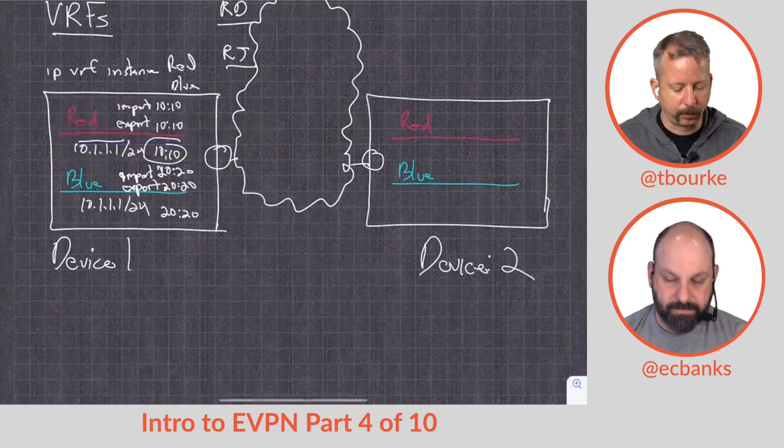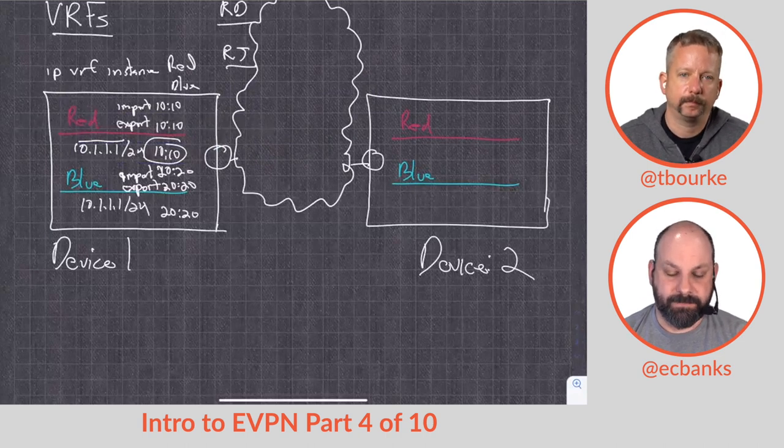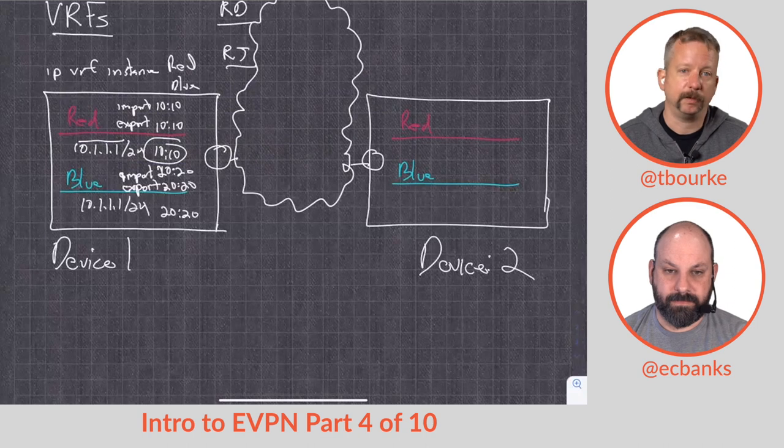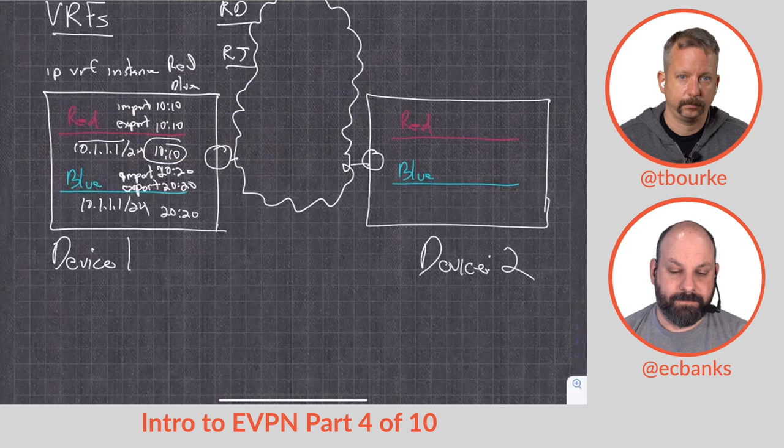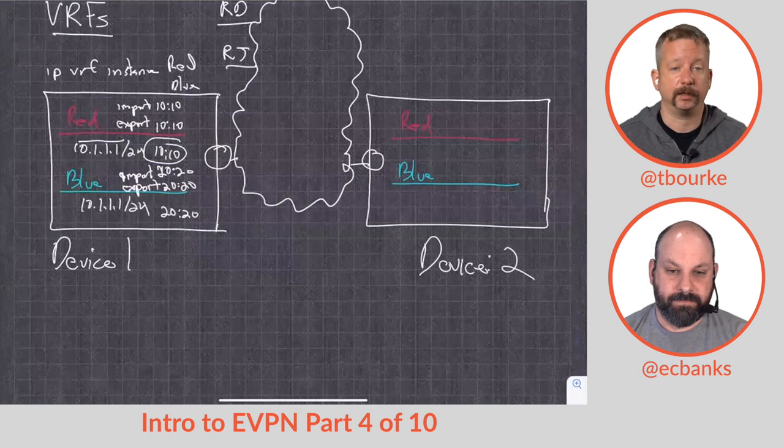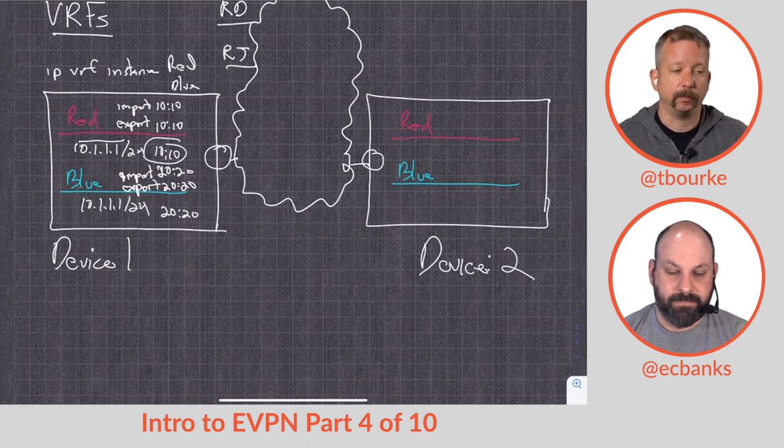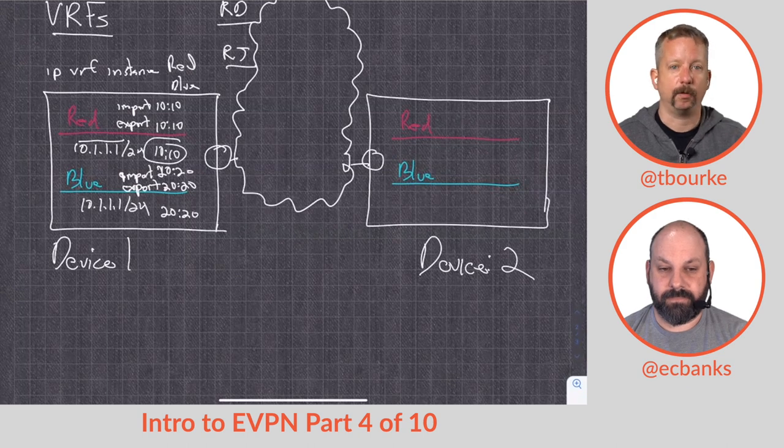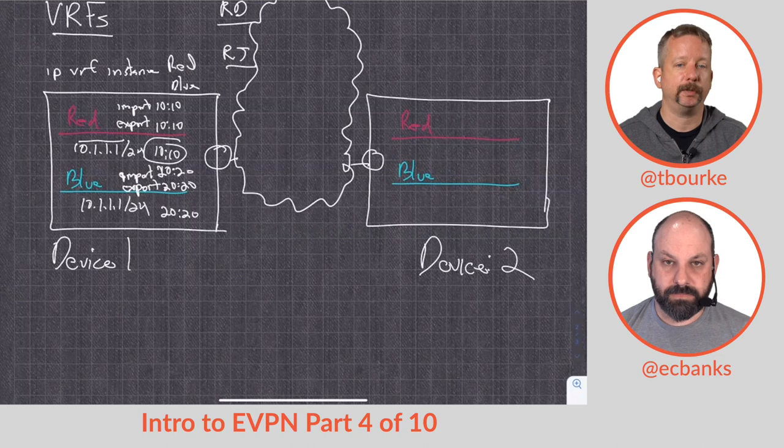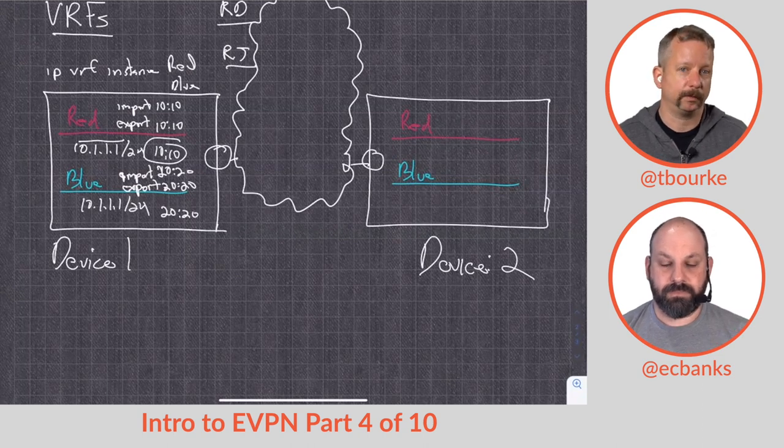My import statement is when I get a route and it's got a route target on it, I look at the route target and it matches my import statement, and then I throw it into that particular forwarding space. Yep, gotcha. So the route distinguishers don't need to match between devices, but the route targets absolutely do need to match. Got it, okay. In fact, the route distinguishers almost never match, and it's another way that we can tell where a route came from, like where the origination of it was. So we typically will use the loopback interface as the route distinguisher so that I know, oh yeah, this came from leaf 4. So if you're using iBGP and you don't have the AS number to tell where the route came from, we can use the route distinguisher if you configure it that way.